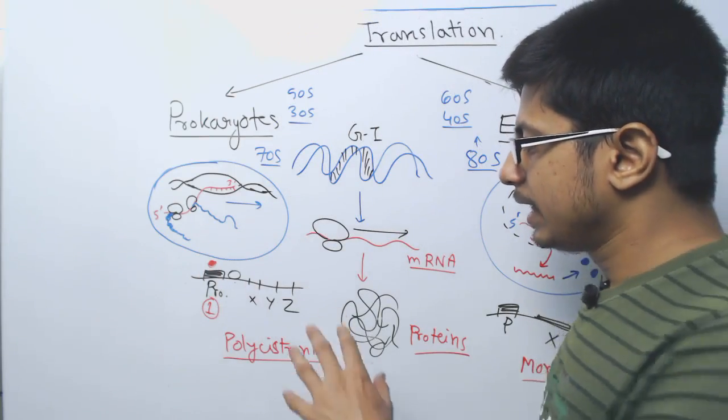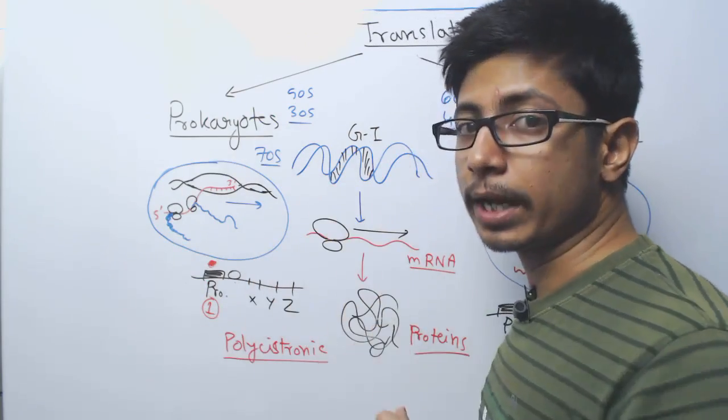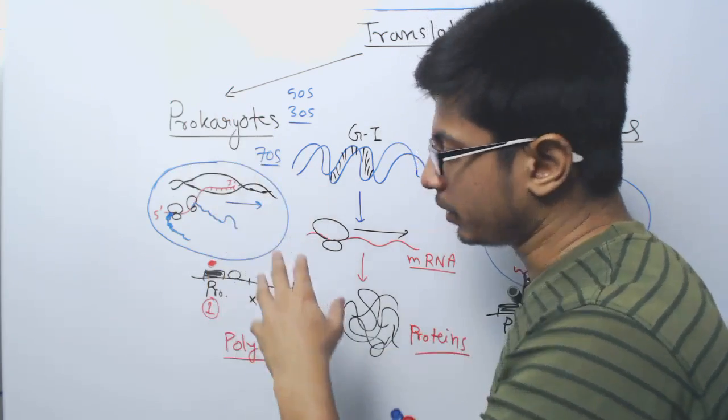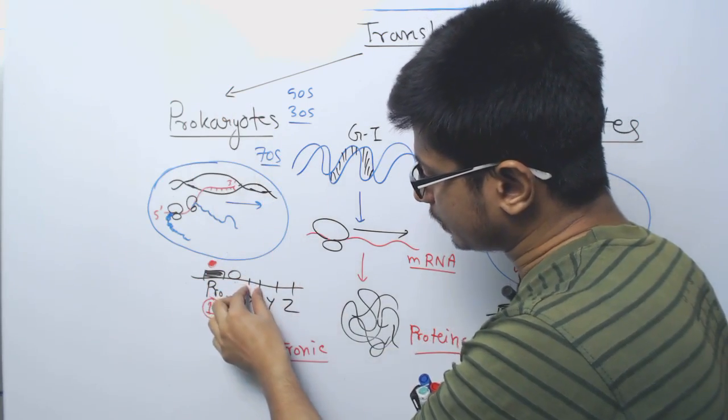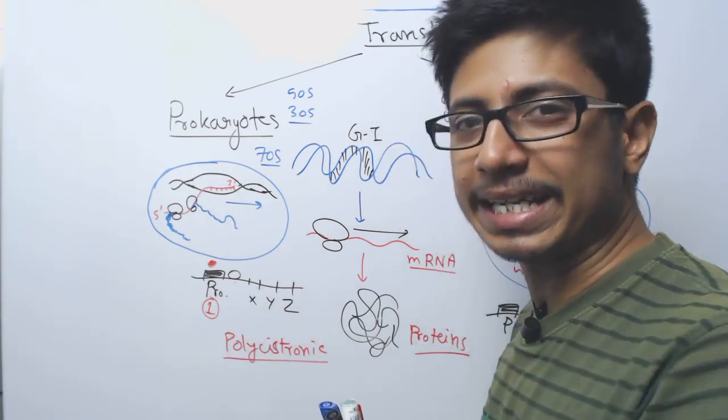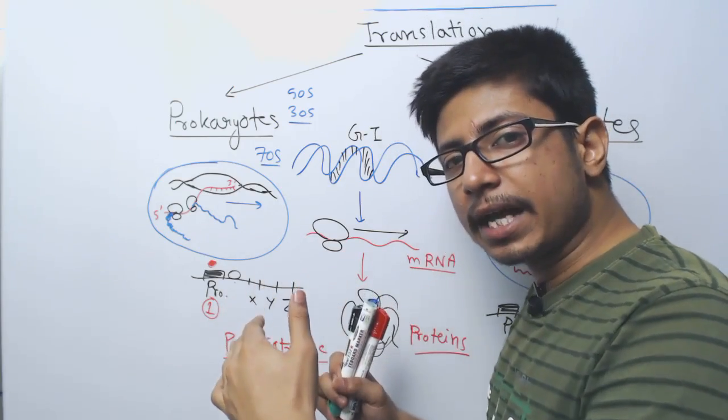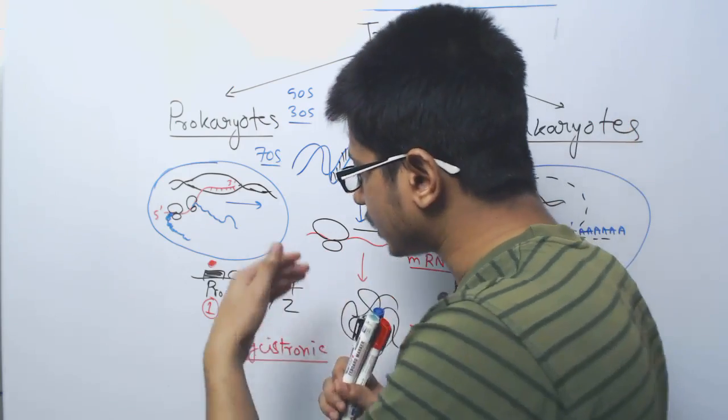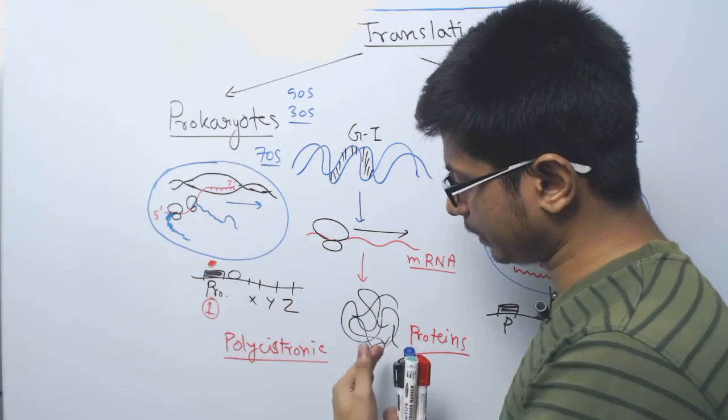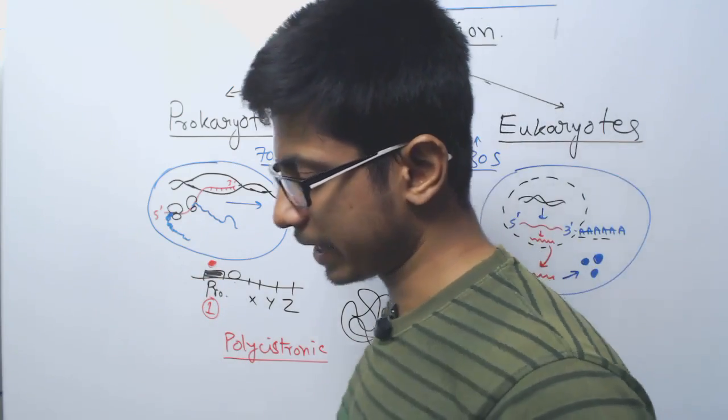The third difference is the process of translation is polycistronic in prokaryotes. If you look at the mRNA of prokaryotes, these are the structural genes which we want to code into proteins, gene X, Y, Z. Multiple genes can be under the control and regulation of one single promoter. One promoter controlling multiple gene expression, poly means multiple cistronic expression.